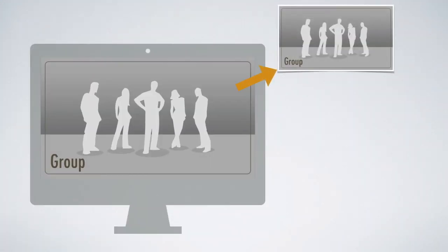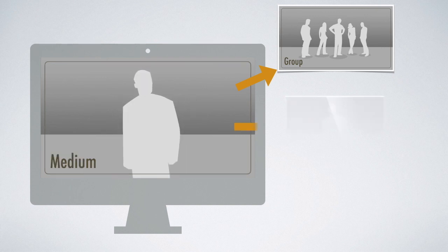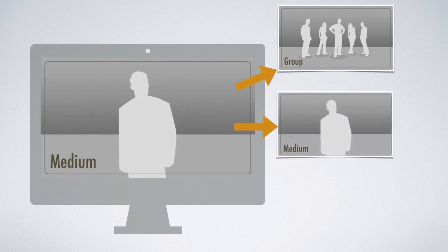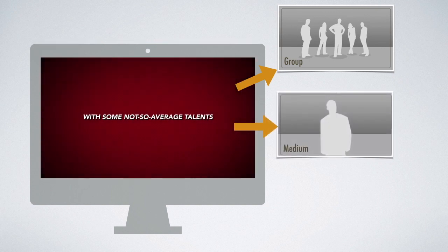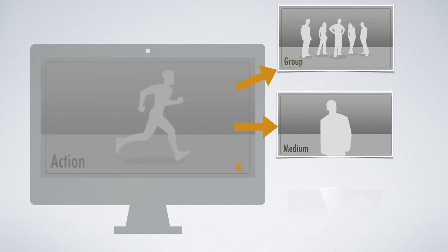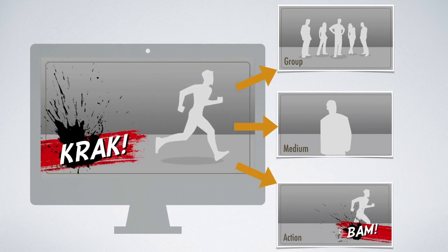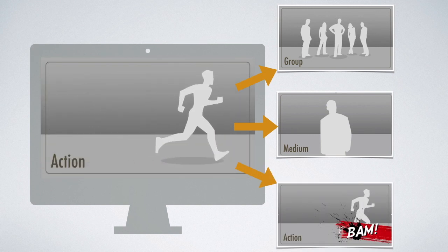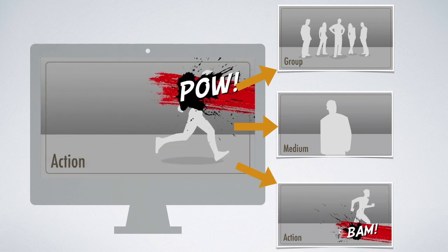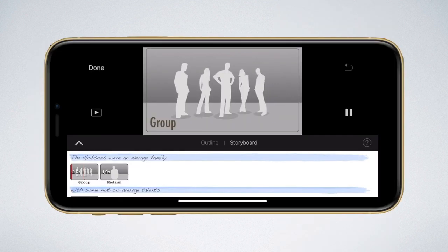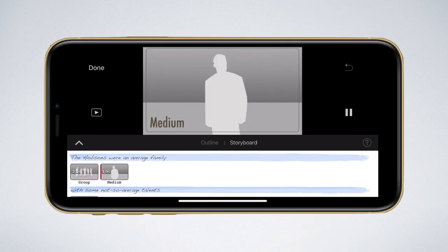I might need a shot of a group of people, or a medium shot which is not too far away but not a close-up either. Or action shots — shots where something is happening, some basic action. The app also indicates how long these shots have to be.